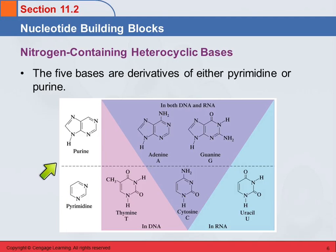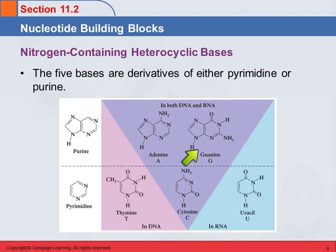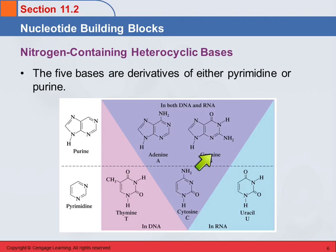The bases are derivatives of these. We have adenine, which is a derivative of purine — it's got an amine group here. And guanine is also a derivative; instead of the amine group, it's got a carbonyl group, and over here it's got an amine group. These are abbreviated A and G. Then there are three derivatives of pyrimidine: thymine, cytosine, and uracil, and these are also abbreviated with the first letter of their name.